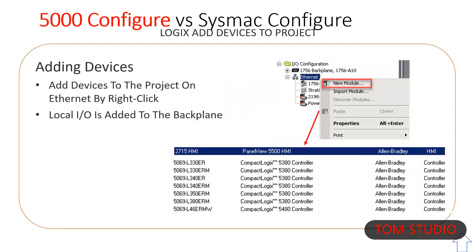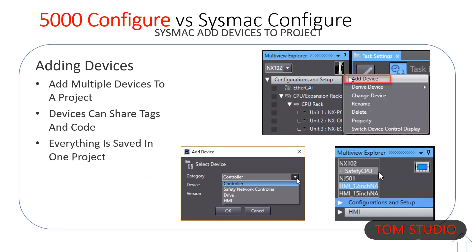You can add HMI or controllers to Ethernet. These devices are just a connection and cannot be programmed from this project. You cannot add a safety CPU unless the parent CPU supports it. Sysmac supports adding multiple controllers and multiple HMIs.